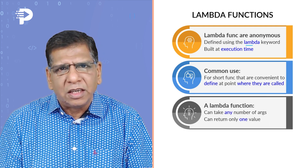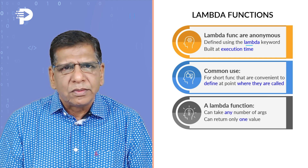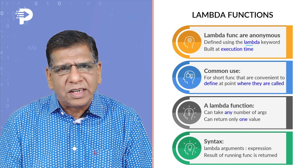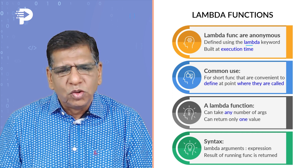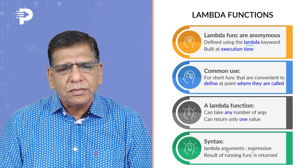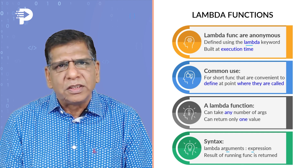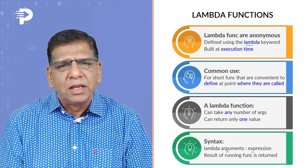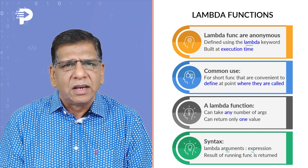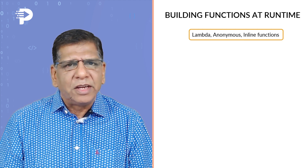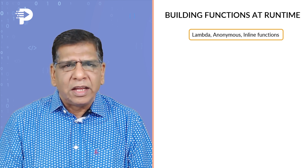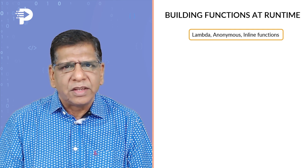A lambda function can take any number of arguments but it can return only one single value. To define one, use the keyword lambda, follow it with arguments, then a colon, and then the expression or the body of the function. The return value is the result of the expression. Lambda functions are also known as anonymous functions because they do not have a name, and inline functions because they are defined right at the point of usage.